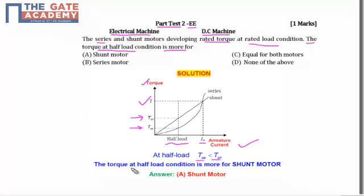So the torque at half load condition is more for a shunt motor. Hence the answer is A, shunt motor.